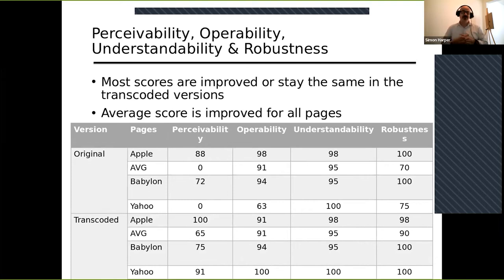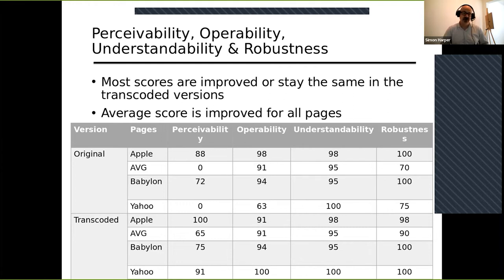We also have a table showing perceivability, operability, understandability, and robustness of these pages. From original to transcoded, mostly everything stays about the same, with some notable changes in operability and perceivability. Perceivability is the most important one — perceivability rates increase drastically in the transcoded version compared to the original. There are also increases in robustness and understandability for the transcoded version, but they're not as large as the perceivability improvement. Our re-engineering has clearly done something to robustness.